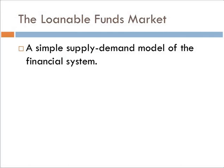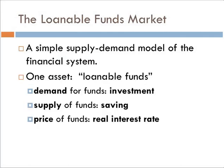We're going to present a very simple model of the financial system. In this model, we have one asset, and that asset is going to be something we call loanable funds — monies that are available to be lent. The demand for those funds is going to come from investment, and the supply of these funds comes from our savings. The price is going to be what we call the real interest rate.